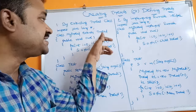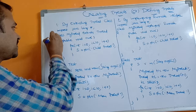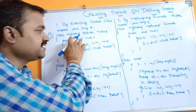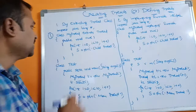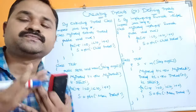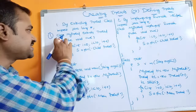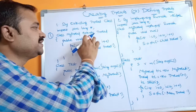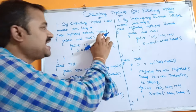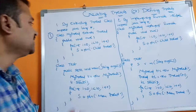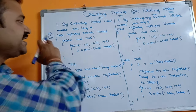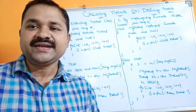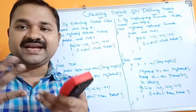The first step is to create a user-defined thread class by extending Thread class. So we define: class MyThread extends Thread. This is step one — creating a class by extending the Thread class. The second step is to provide the definition or functionality for the thread.